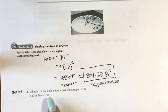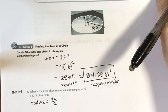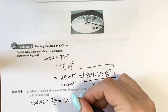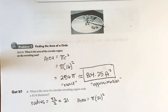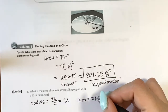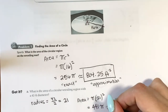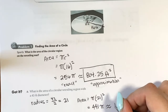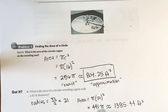Let's do one more. What is the area of a circular wrestling mat with a 42-foot diameter? Since it's a diameter, the radius equals 42 divided by 2, which is 21. Now I can plug that into my area formula: area equals pi times 21 squared, and 21 squared is 441. So the exact answer is 441π. If you want the approximation with the decimal, you can put it into your calculator and you get about 1385.44. So it just depends on whether they want the exact or approximate answer.